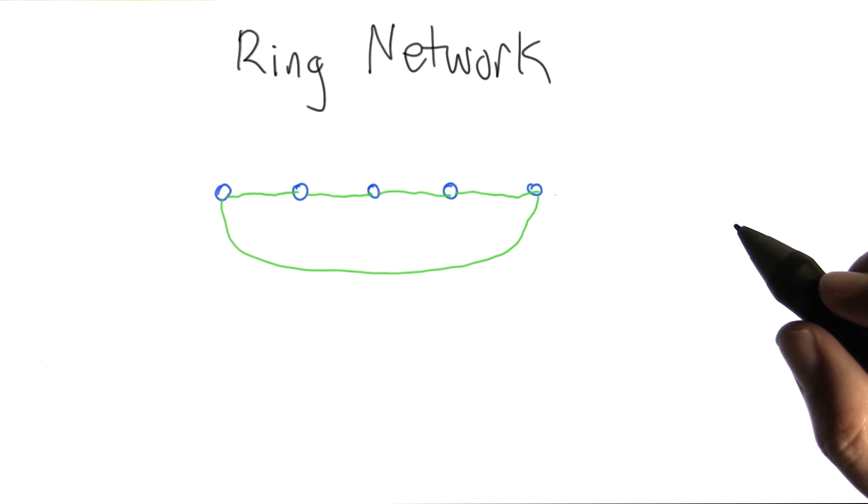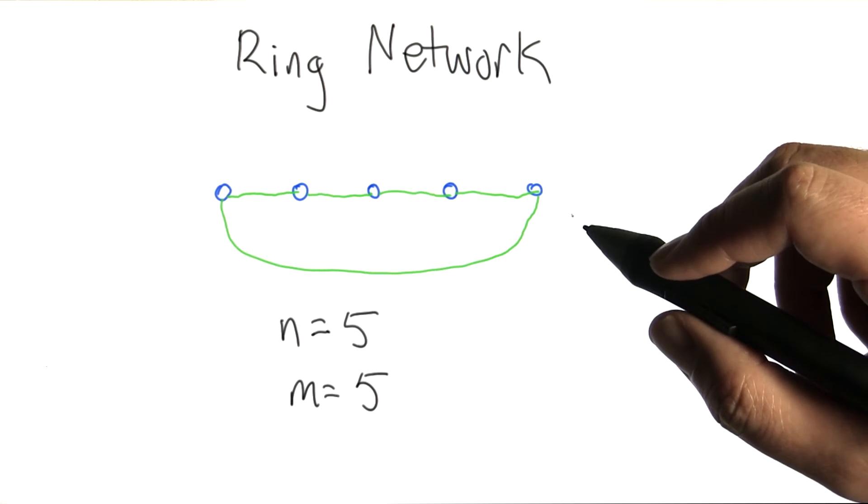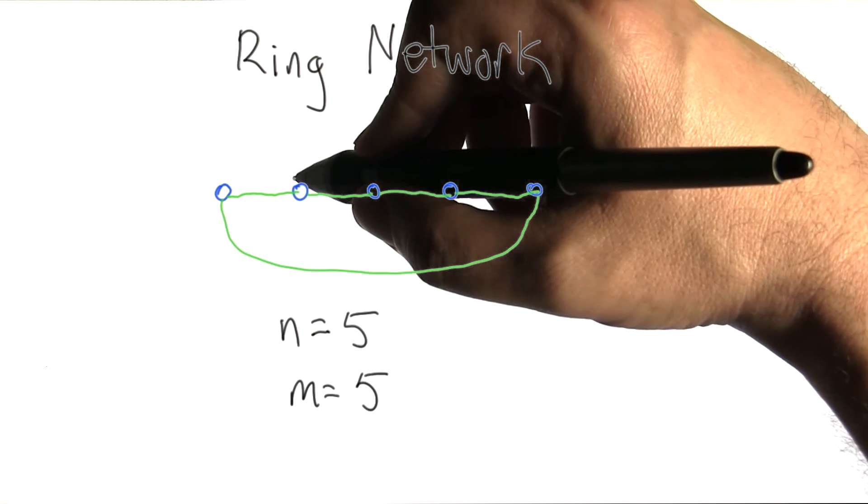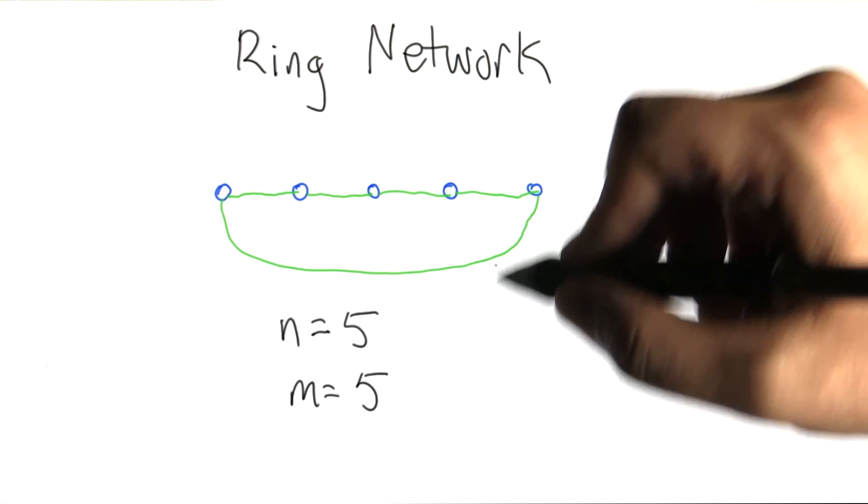But lots of other things do have this sort of relationship. And as we can see in this particular example, we have a ring of five nodes, and there are five edges. One, two, three, four, five.